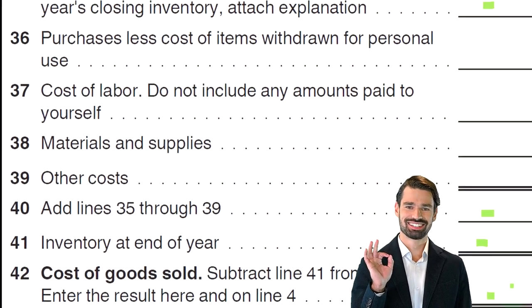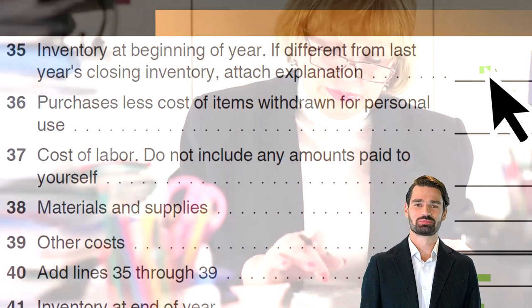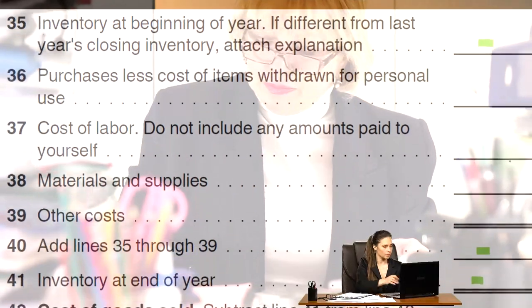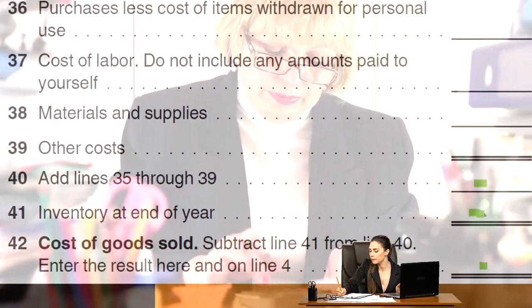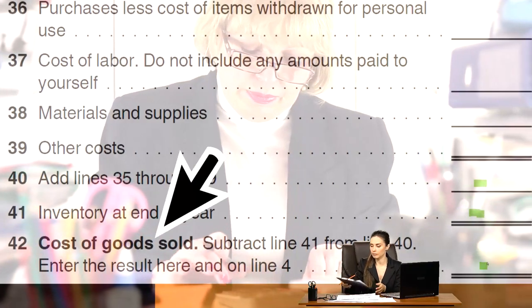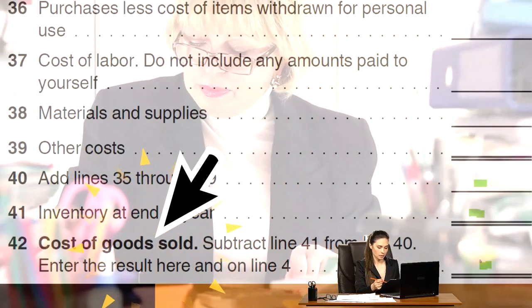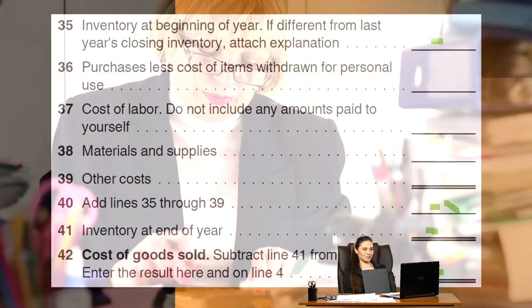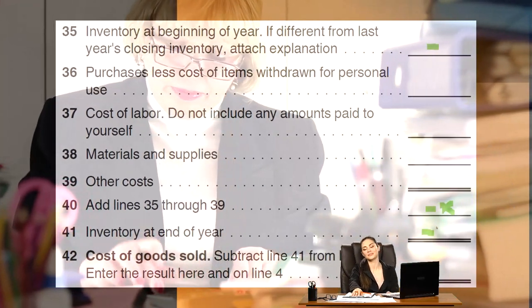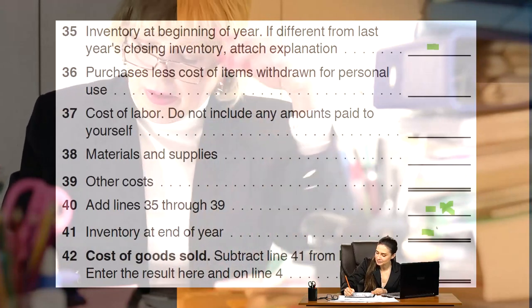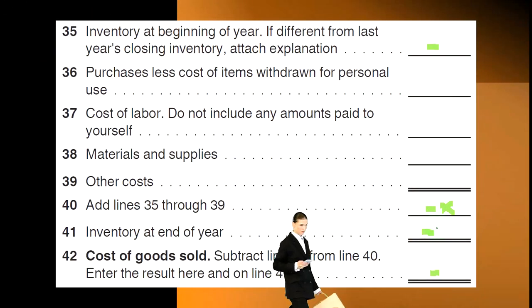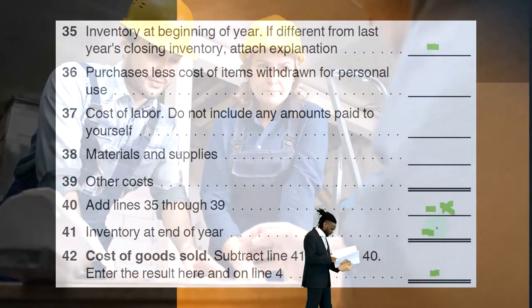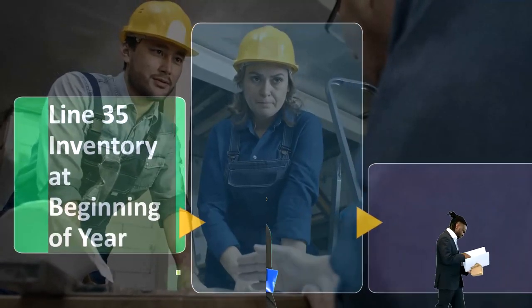If you're using your own bookkeeping system, the beginning inventory figure should be known from the prior year tax return, and ending inventory should be in your accounting software. If your cost of goods sold is also known from your income statement in the accounting software, you can use algebra to solve for the unknown — which would be purchases. This gets more difficult if you have a construction, job cost, or process cost system — a manufacturing company rather than one just buying and selling inventory.